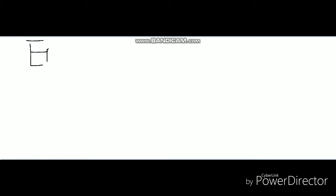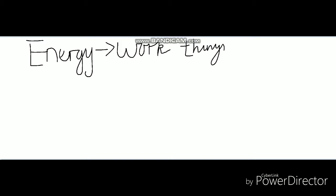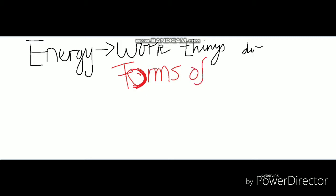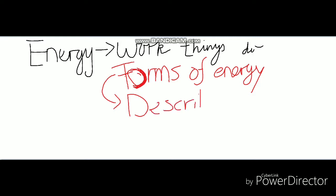Today we're going to look at energy, the different forms of energy, how energy is measured, and some common misconceptions among grade seven students. Energy is just work — anything that works has got energy. We use forms of energy to describe what type of work something is doing. Think of the forms of energy almost like an adjective in science language.